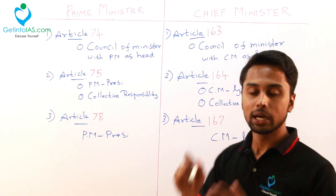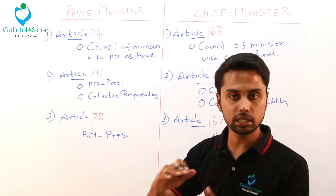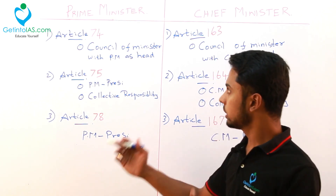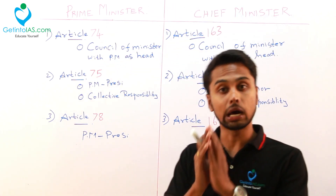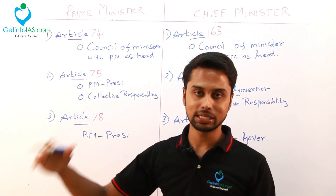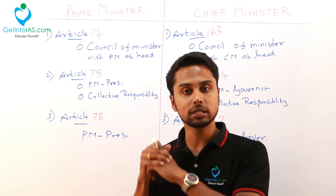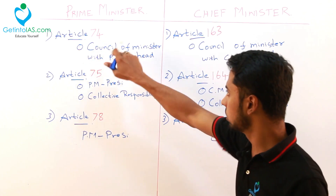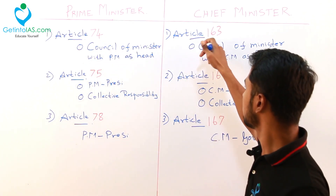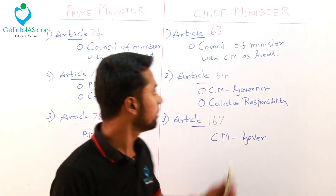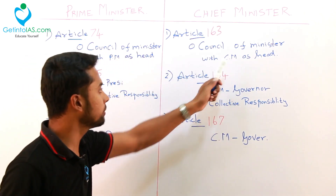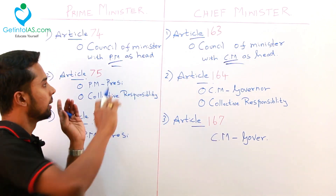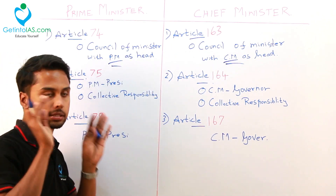Chief minister is also the real executive — he has real power within the state, and the governor is the nominal head. To say simply: your prime minister and chief minister are the head of the government, and your president and governor are the head of the state. Article 163 also contains a council of ministers with chief minister as head. Here it is prime minister, there it is chief minister — that is the only difference, but both articles carry the same idea.